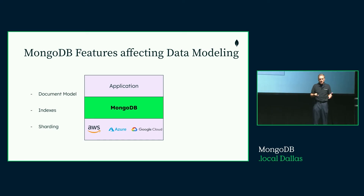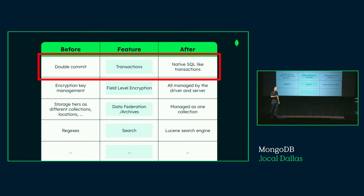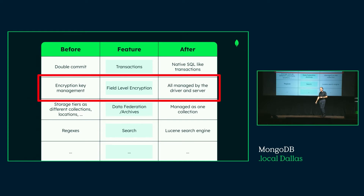For MongoDB, typical features that come to mind when doing data modeling are the document model, indexes, and sharding. But there are newer ones — transactions, field-level encryption, data federation, and archive. The interesting thing about those last three is they weren't there when I joined MongoDB. For example, if you wanted to model a transaction in the early days, you'd use the document model to avoid transactions, or implement a two-phase commit. Now we have native SQL-like transactions in MongoDB, even for sharded clusters.